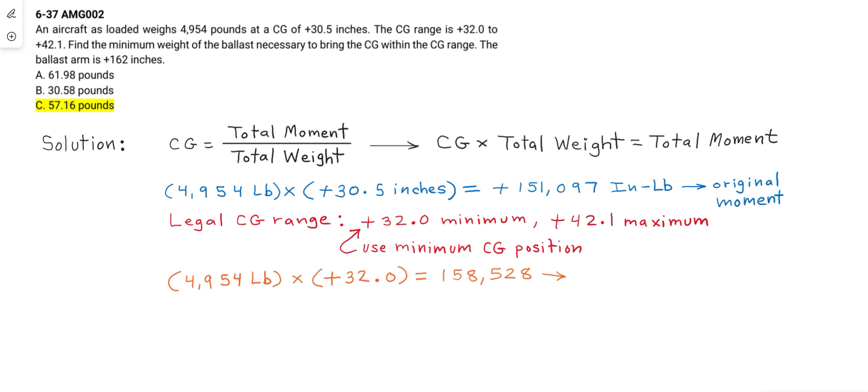We multiply the loaded weight, 4,954 pounds, times the minimum CG position of 32.0 to compute the final moment of 158,528 inch-pounds.